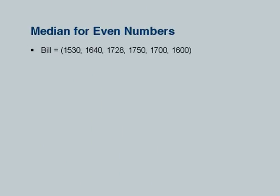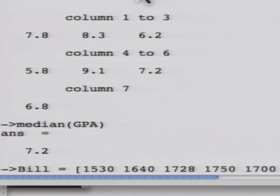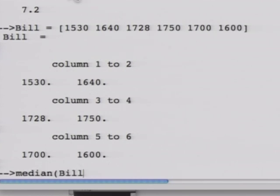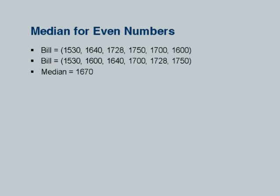For the mess bill with 6 values — an even number — you will have two numbers in the middle. Take the arithmetic mean of those two numbers. Bill values: 1530, 1640, 1728, 1750, 1700, and 1600. After sorting, 1640 and 1700 are in the middle. Median bill is 1670.